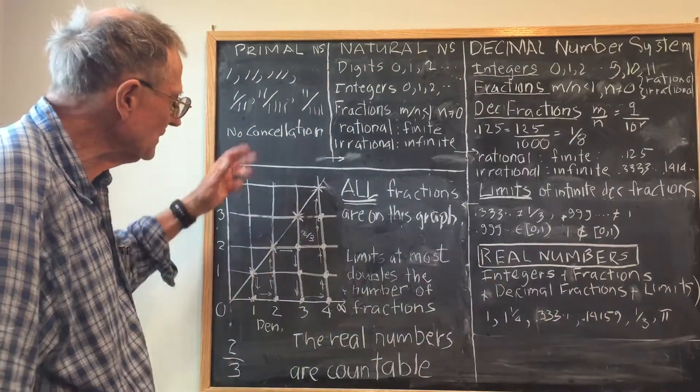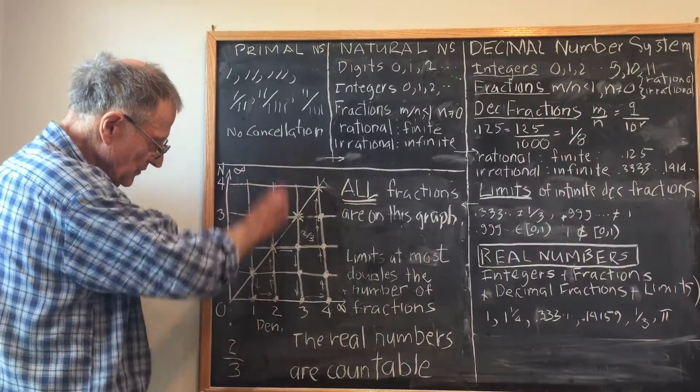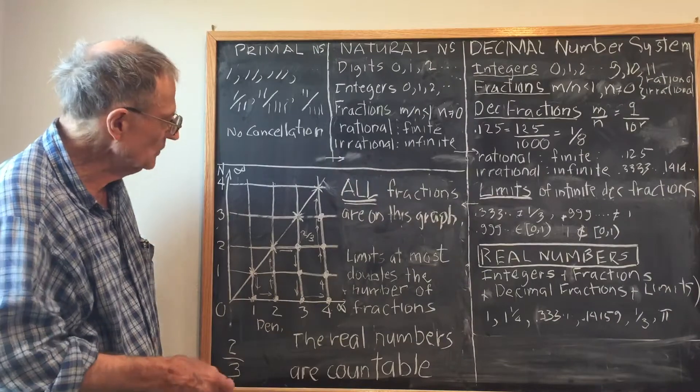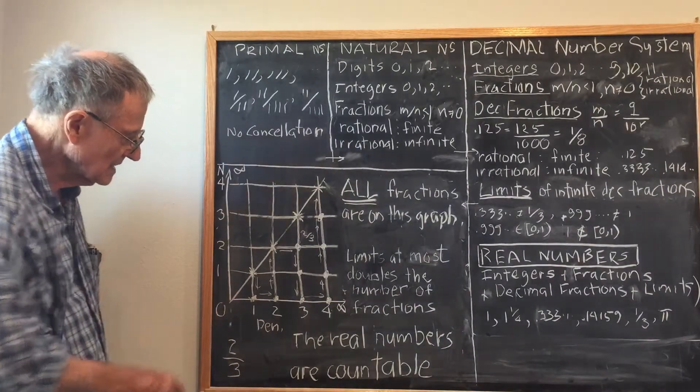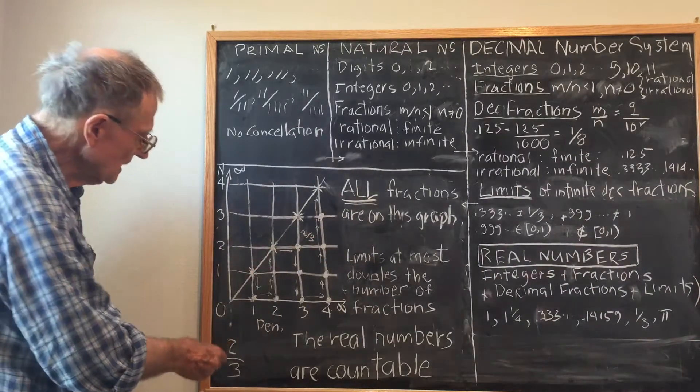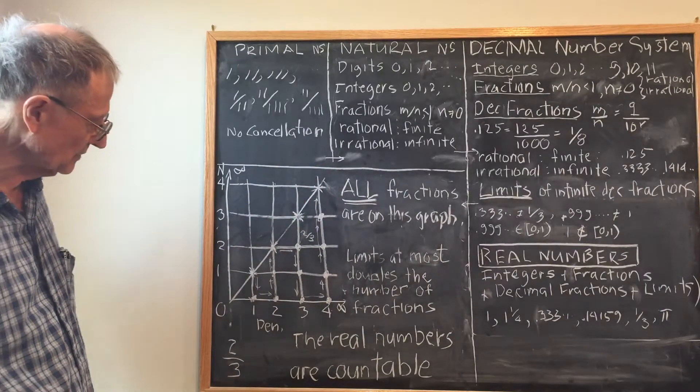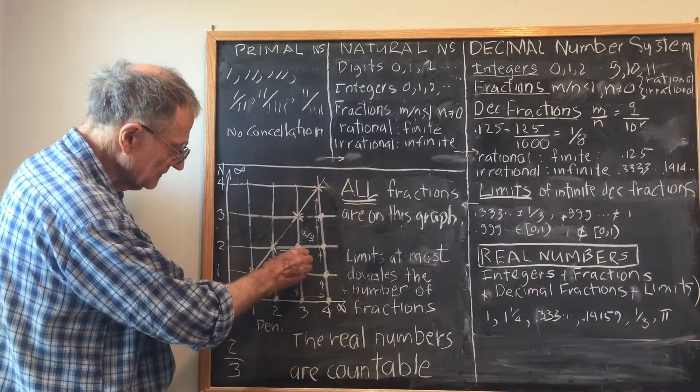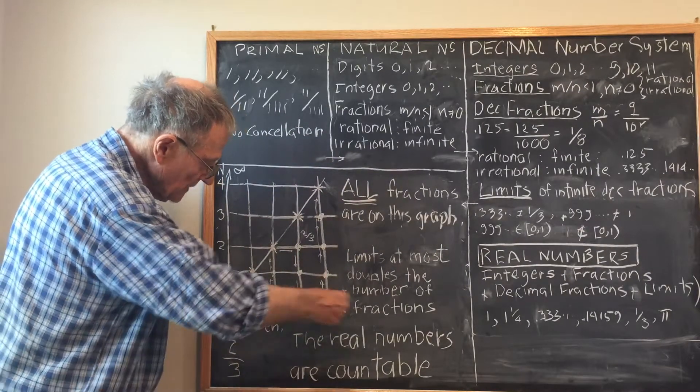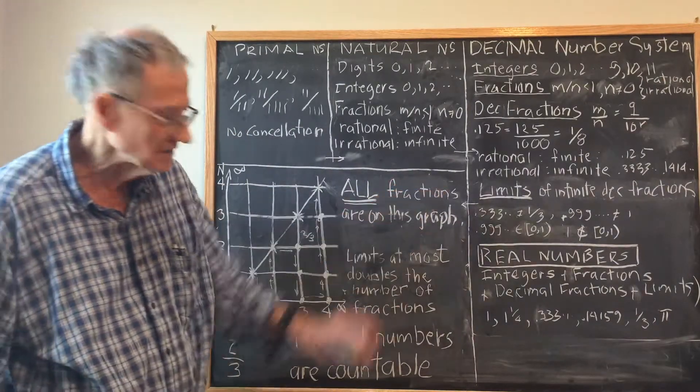Now, all fractions can be displayed on a graph in the following manner. I'm going to create a grid, and the denominator is going to be plotted on the x-axis, the numerator is going to be plotted on the y-axis, and any fraction will be some point on this grid less than the line m equal n. So 2 thirds, for example, has a denominator of 3 and a numerator of 2. There's the fraction 2 thirds. I note that the denominators and the numerators both can go to infinity, so all fractions are on this graph.